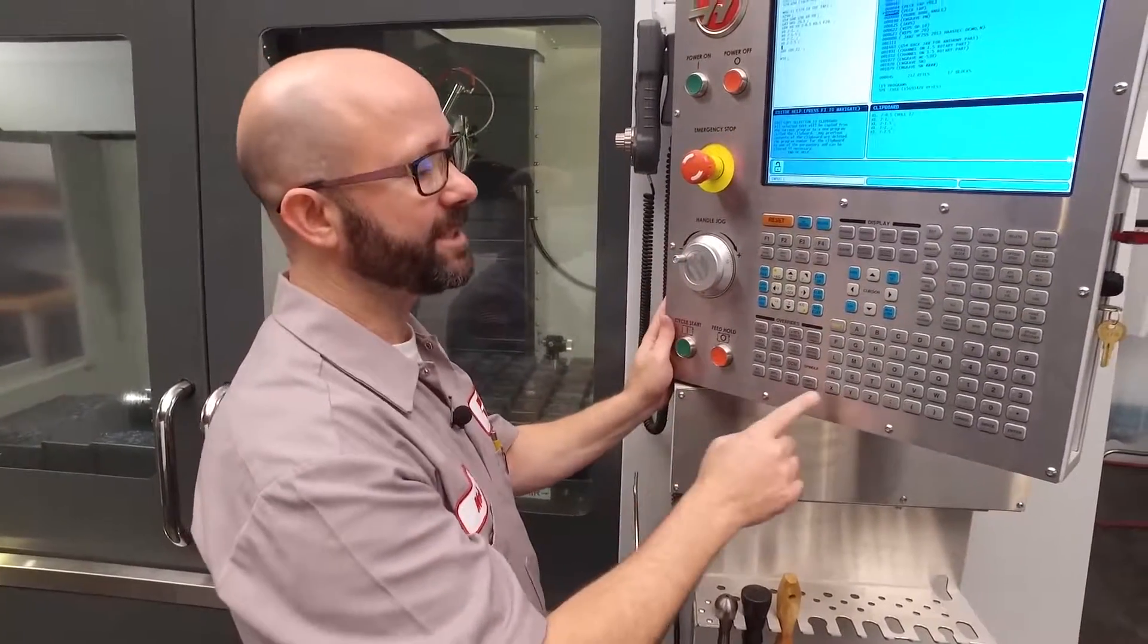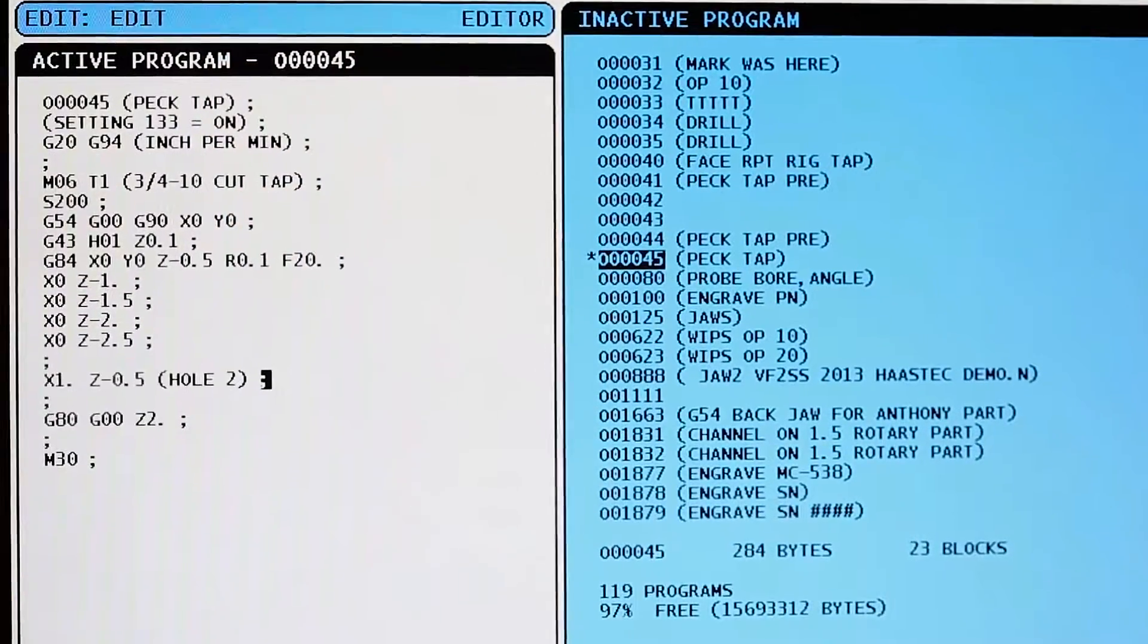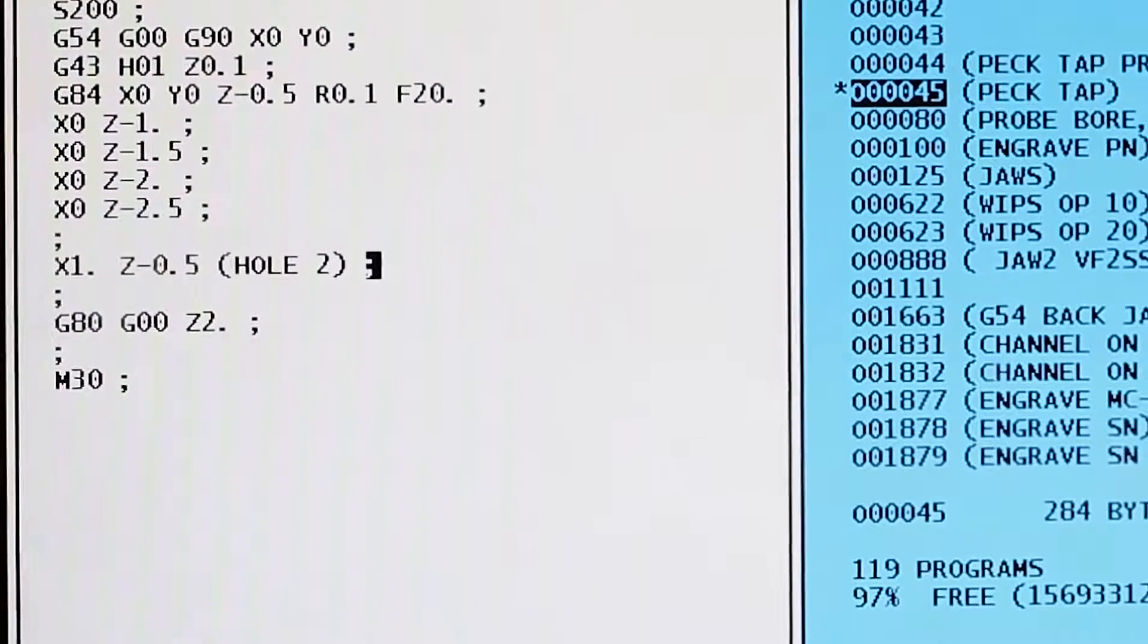Now, we're still inside the G84 can cycle. So if we wanna tap a second hole, all we have to do is command a new X, Y location. I'm gonna type in X one inch, Z minus 0.5. Now, instead of tapping at X zero, Y zero, it's gonna tap at X one, Y zero, to a depth of Z minus 0.5.